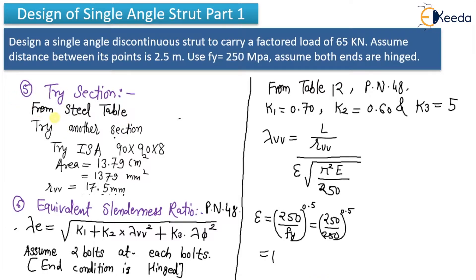My 75×75 section was failed, so I tried the 90×90 section whose area is 1379 mm² and r_vv is 17.5. The first thing to calculate after trying the section is the equivalent slenderness ratio. I have explained all terms — k1, k2, k3, and lambda_vv — in the previous video. I assumed two bolts at each end with hinged end conditions, giving k1 = 0.70, k2 = 0.60, and k3 = 5, taken from page 48.